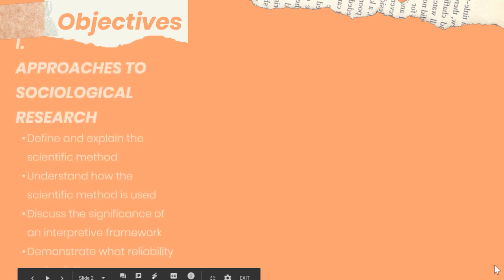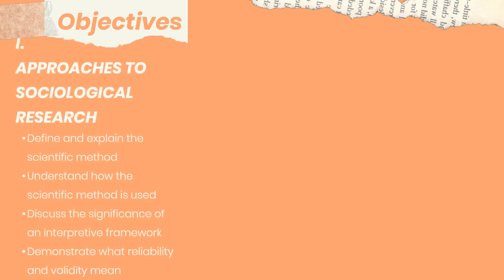We have three objectives for this video lecture. First, we'll look at approaches to sociological research. Objectives here will include learning how to define and explain the scientific method, how it's used to answer certain questions about our social world, discuss the significance of an interpretive framework, and understand what reliability and validity means in research.